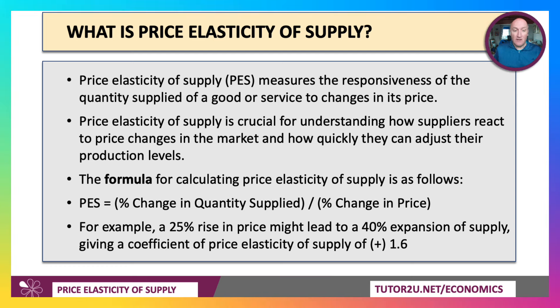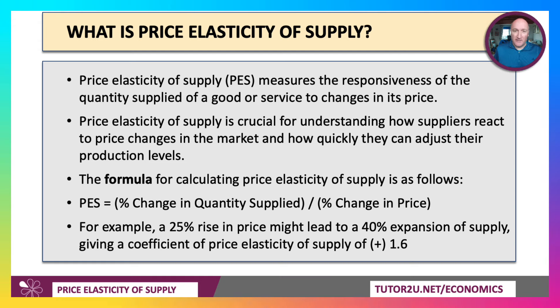For example, a 25% rise in price might lead to a 40% expansion of production. Plus 40 over plus 25 gives plus 1.6.